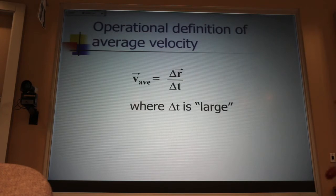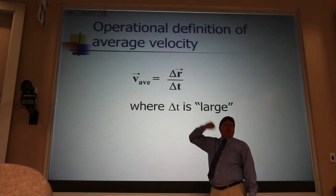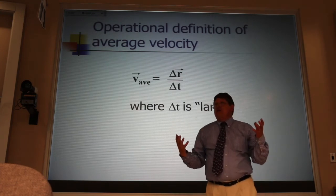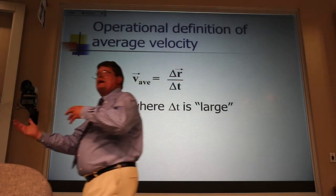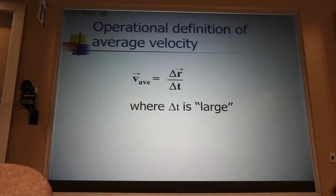Now, the operational definition for average velocity looks like the general definition for velocity. But with the caveat that delta T can be large. Large enough that you can speed up, slow down, stop for a stop sign. It's just the total distance divided by the total time.